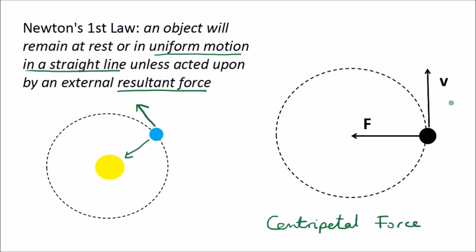Another thing to note about circular motion is that the object travels with constant speed but changing velocity, and this is due to the constantly changing direction. Velocity is a vector quantity, and even though the speed — the magnitude — is the same, the direction is constantly changing. Therefore the velocity is changing, meaning the object is accelerating, and it accelerates due to this resultant force.